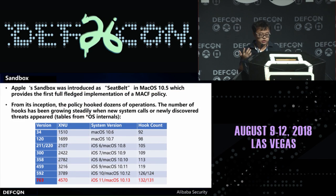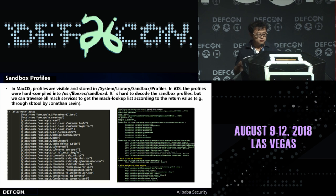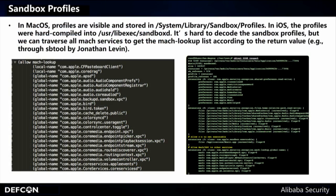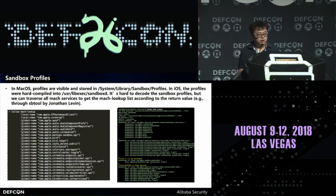From this build table we can know there is a concept called sandbox profiles. Sandbox profiles define what Mach services can be accessed by sandbox applications. In macOS these profiles are visible and stored in the system library sandbox profiles file. In iOS the profiles are hard-coded and difficult to decode. But we can traverse all Mach services to get the list of services that can be accessed by sandbox applications.